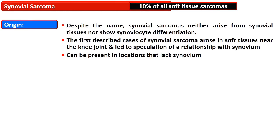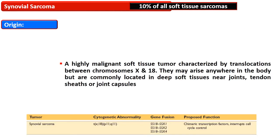Synovial sarcoma is grouped with soft tissue tumors and comprises about 10% of all soft tissue sarcomas. Despite its name, it neither arises from nor shows any synovial differentiation. It got this name as the first case arose in soft tissue near the knee joint, which led to the presumptive relation with the synovium. However, this lesion can be present in locations that lack synovium.